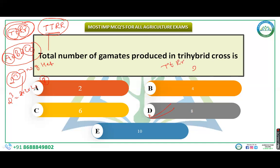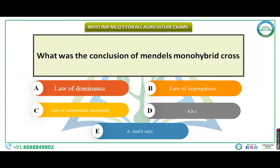Next question: what was the conclusion of Mendel's monohybrid cross? Options are law of dominance, law of segregation, law of independent assortment, A+B+C, or A and B only. From the monohybrid cross, two conclusions were drawn: the law of dominance and the law of segregation. The correct answer is A and B only. The law of independent assortment is the conclusion drawn from the dihybrid cross.